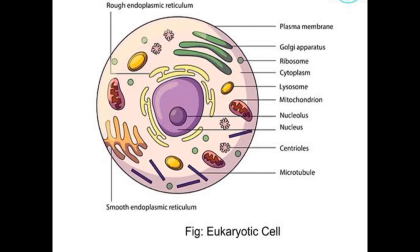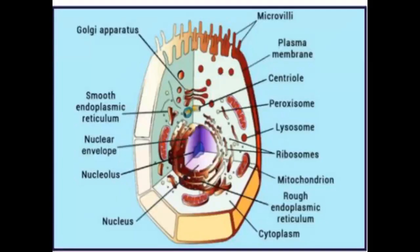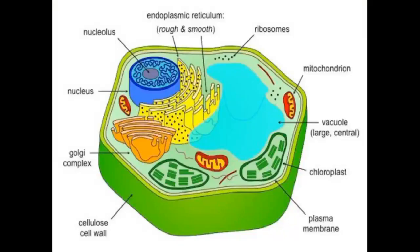Cytoplasm in eukaryotic cells is found between the plasma membrane and the nucleus. It consists of fluid and organelles. The nucleus in eukaryotic cells is bound by a nuclear envelope and contains nucleoplasm.